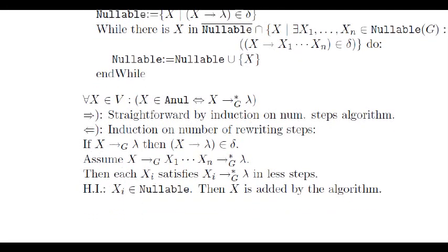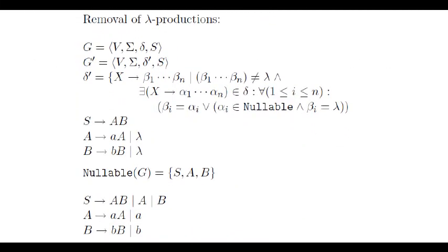Let's see now how computing the set of nullable symbols is useful in order to remove lambda productions. Consider a grammar G. The removal consists of transforming the set of rules of G into a new set of rules. The new rules are obtained by choosing one rule from G, choosing some of the nullable symbols of its right hand side, and erasing them while avoiding the addition of a lambda production.